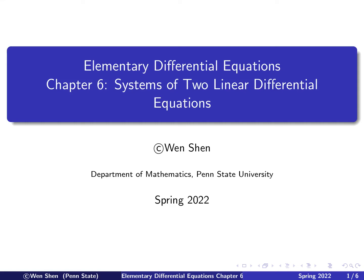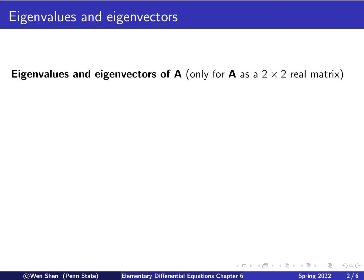Hello everyone, welcome to my videos on elementary differential equations. This is video number 3 for chapter 6, and the topic for the chapter is systems of two linear differential equations. Now we continue our review on matrices. In this video we'll talk about one specific property of a square matrix — that is, the eigenvalues and the corresponding eigenvectors. We will focus our review on A being a 2 by 2 real matrix. So for a matrix A, we wish to find two quantities: one we call lambda, which is a scalar value, and another we call V, which is a column vector that is not identically zero.